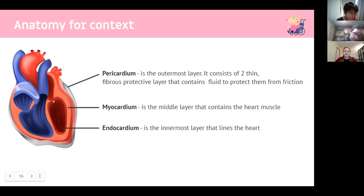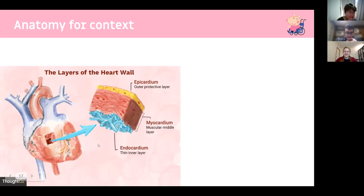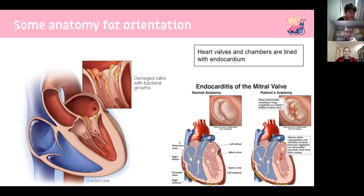Endocarditis is the inner layer of the heart. Valves separate each chamber. The tricuspid valve separates the right atrium from the right ventricle, and another valve separates the right ventricle from the pulmonary trunk going to the lungs. Infective endocarditis involves damage to these valves due to bacterial growth. Different bacteria affect different valves depending on how they enter.